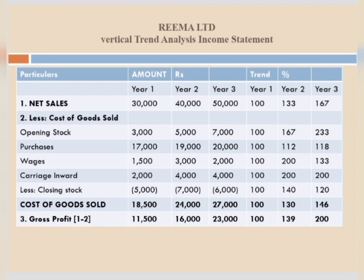Now for closing stock — since it is deducted, I put a bracket to indicate it will be minused. After deducting closing stock, cost of goods sold is: Year 1 = 18,500, Year 2 = 24,000, Year 3 = 27,000. For the percentage, we use the formula: Year 2 — 24,000 divided by base year 18,500 into 100 = 130. Year 3 — 27,000 divided by base year 18,500 into 100 = 146. Then gross profit: 1 minus 2. Net sales minus cost of goods sold: Year 1 = 30,000 minus 18,500 = 11,500. Year 2 = 40,000 minus 24,000 = 16,000. Year 3 = 50,000 minus 27,000 = 23,000. Year 2 percentage: 16,000 divided by 11,500 into 100 = 130 (approx). Year 3: 23,000 divided by 11,500 into 100 = 200.